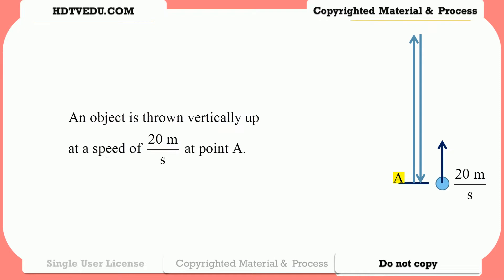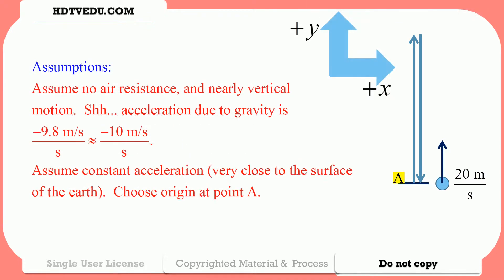An object is thrown vertically up at a speed of 20 meters per second at point A. Assume no air resistance, vertical motion, and acceleration due to gravity is negative 9.8 meters per second per second. For learning purposes, let's keep it at negative 10 meters per second per second. Assume constant acceleration. You're very close to the surface of the earth. Choose origin at point A.